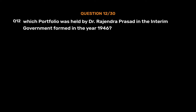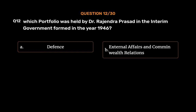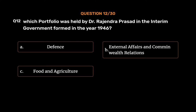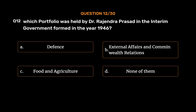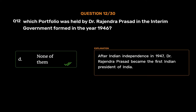Question No. 12. Which portfolio was held by Dr. Rajendra Prasad in the interim government formed in the year 1946? Option A, Defense; Option B, External Affairs and Commonwealth Relations; Option C, Food and Agriculture; Option D, None of them. The correct answer is Option D, None of them. After Indian independence in 1947, Dr. Rajendra Prasad became the first President of India.